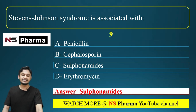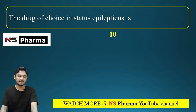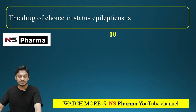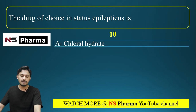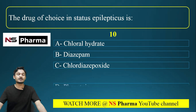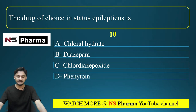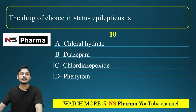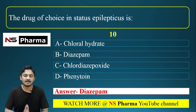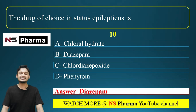Question number ten: The drug of choice in status epilepticus. Options are: Option A, chloral hydrate; Option B, diazepam; Option C, chlordiazepoxide; Option D, phenytoin. The correct answer is Option B, diazepam. Diazepam is the drug of choice in status epilepticus.